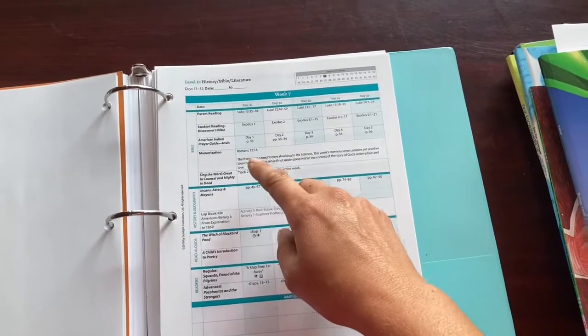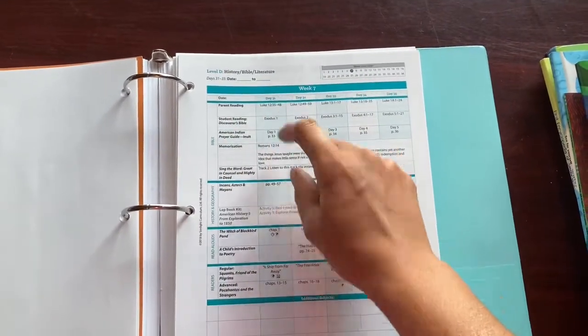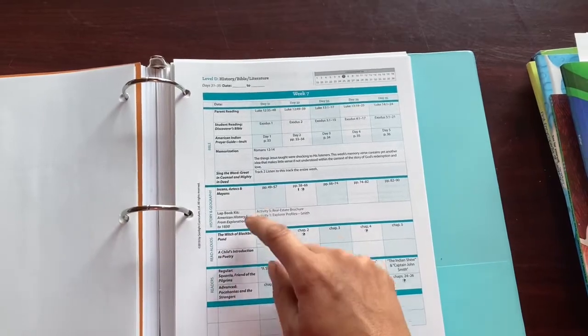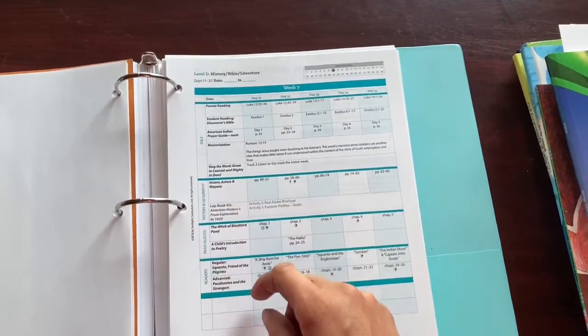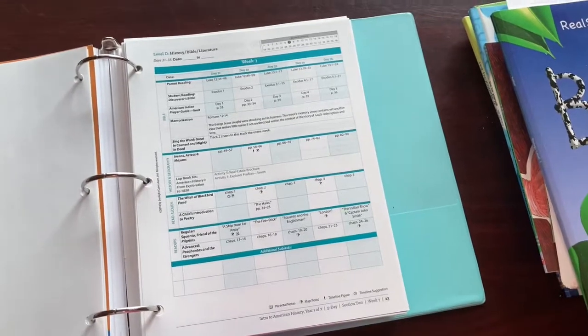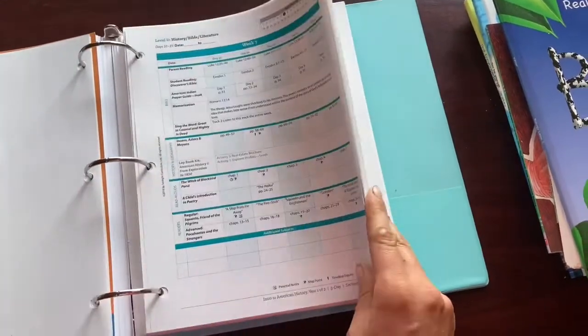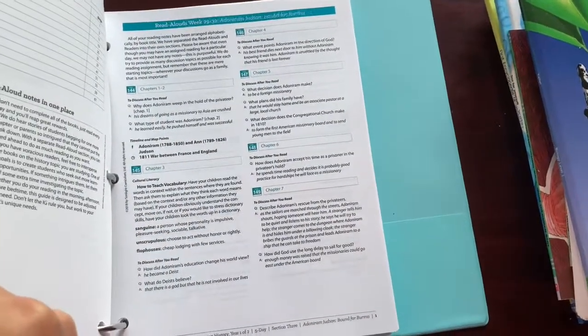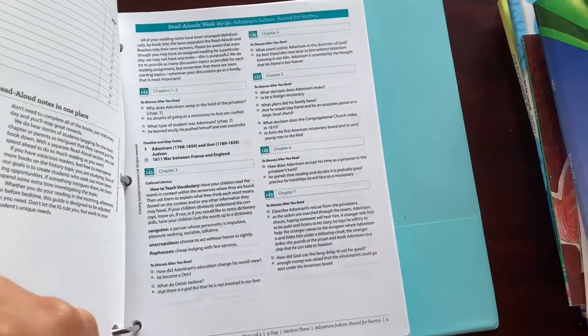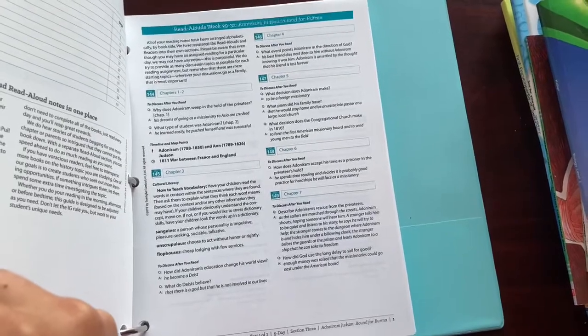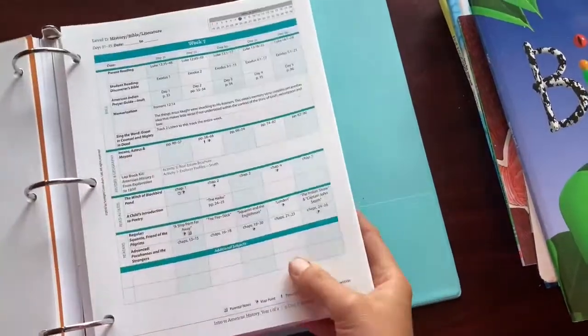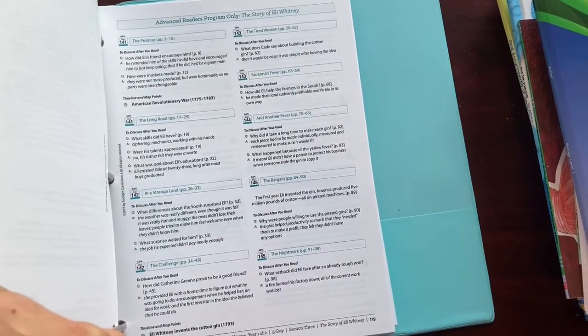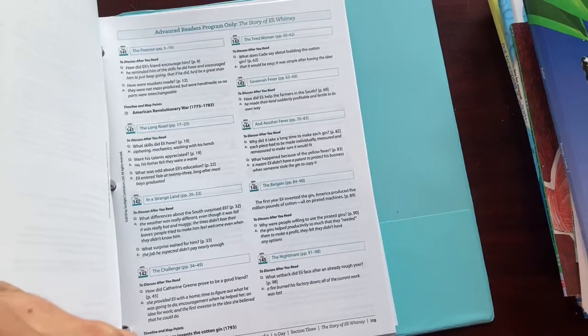I only do the parent reading of the Bible and I do the read-alouds with him. He reads the history on his own and the rest of the Bible and, of course, the readers on his own. Then there are questions as it goes through. Here's an example for read-alouds, there are discussion questions. And you could just pause this if you're interested. They have the same type of thing for the readers, comprehension questions that I can go over with him each day after he does his work to make sure he's on track.